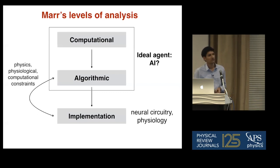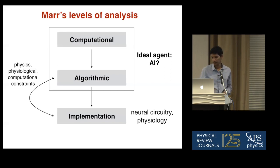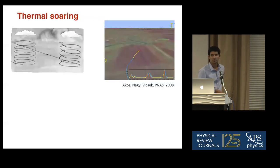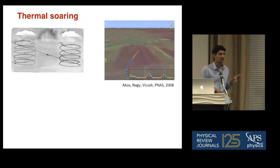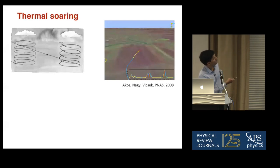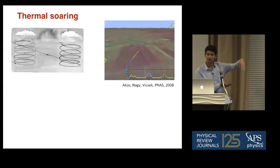One question is whether you can use artificial intelligence as a way to generate an ideal agent that does this task very well. Coming to the talk itself, we are interested in what's called thermal soaring. This is what birds do very often — eagles especially are almost always gliding, not flapping their wings. What they're using is atmospheric convective currents to gain height. The strategy is: they find a current, go up, then glide down to the next thermal, find it, go up, and so on. This way they can migrate long distances.